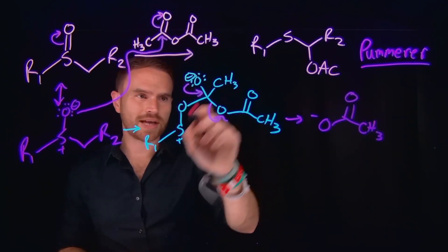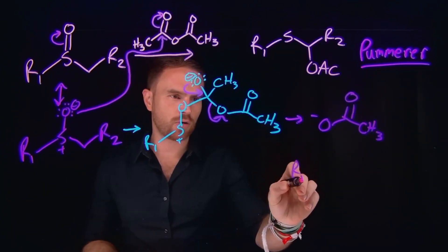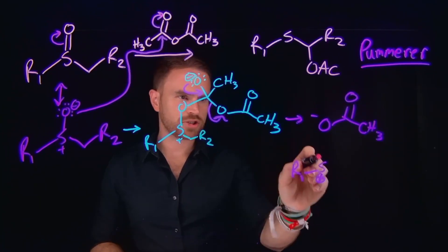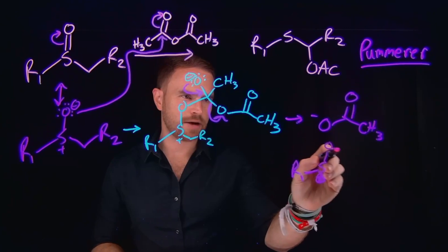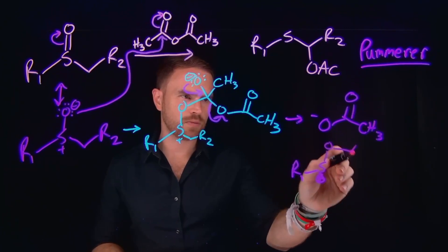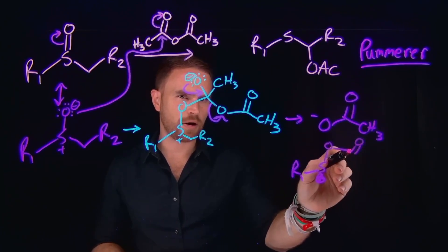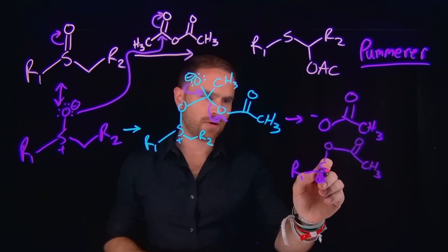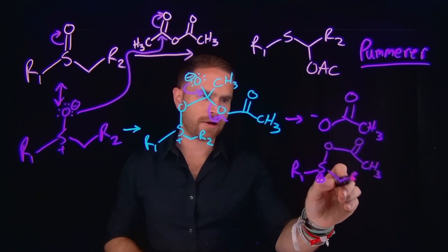And then what we're left with is the rest of this molecule. So we have this R1 species attached to the sulfur, which is going to be positively charged. Our sulfur to oxygen bond, which we formed in this reaction, is now going to be attached to this carbonyl carbon, which has reformed that CO double bond. And then we also still have this CH3 group here. And then don't forget, we still have this CH2 followed by our R2 also.